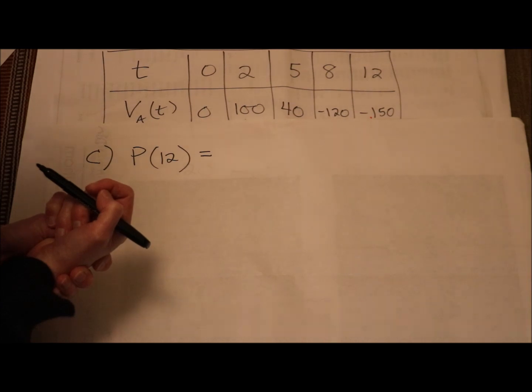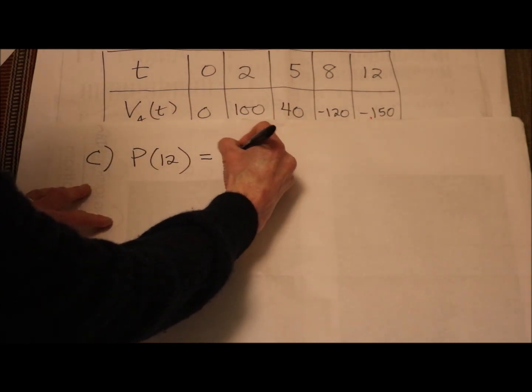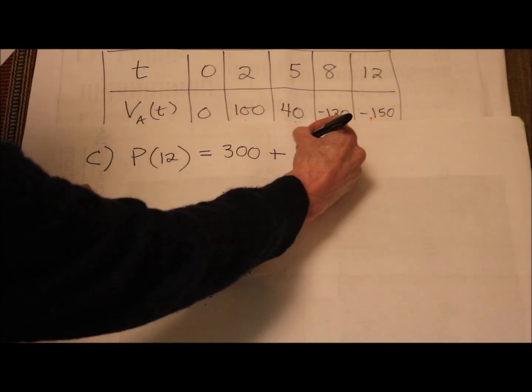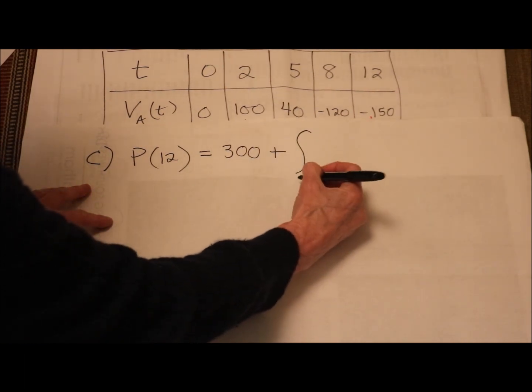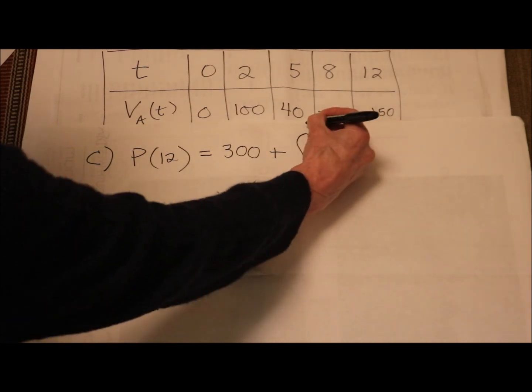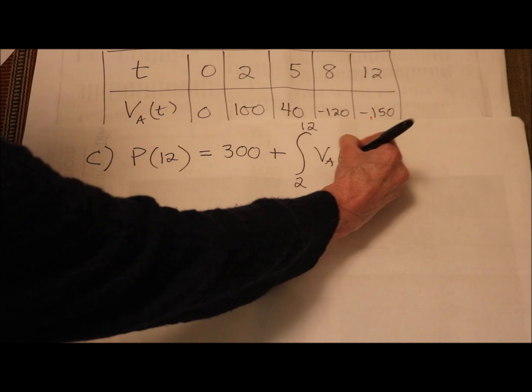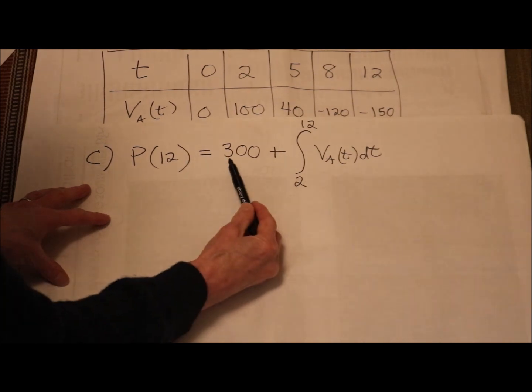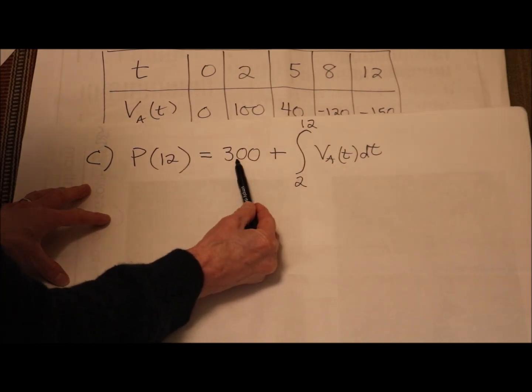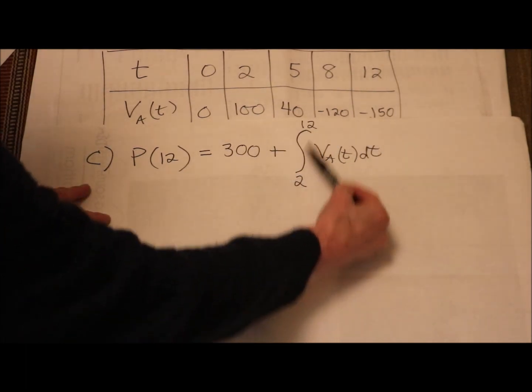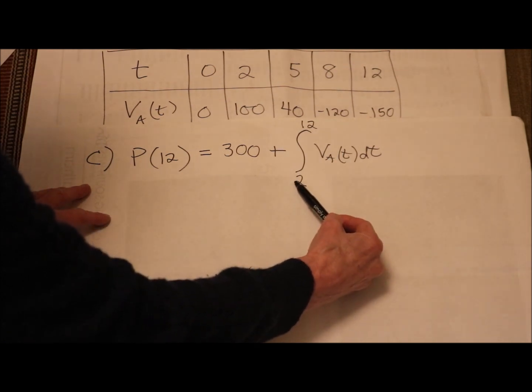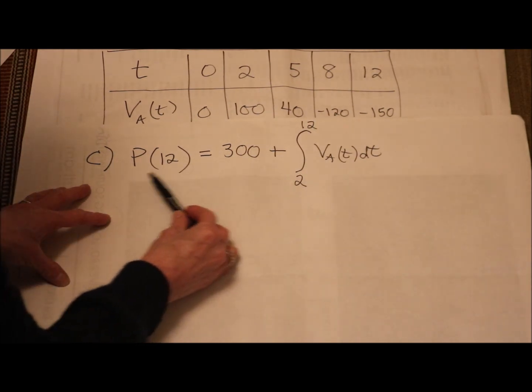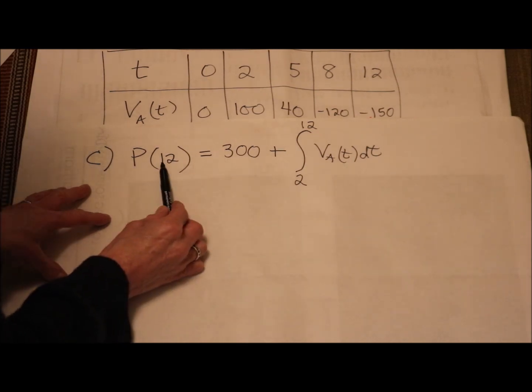Part c is asking for the train's position at time 12. So let's call that P of 12, the position at time 12. This is Fundamental Theorem of Calculus. They gave us the position of the train at time 2. So I'm 300 meters east. And to that position, since I'm moving east, I'm going to add my change in position from 2 minutes to 12 minutes. And there it is. Fundamental Theorem of Calculus. My position at time 12 is my starting position, or I should say my position at time 2. This integral from 2 to 12 of the velocity gives me my change in my position from 2 to 12, otherwise known as my displacement. So this is an integral expression that gives me my position at time 12.